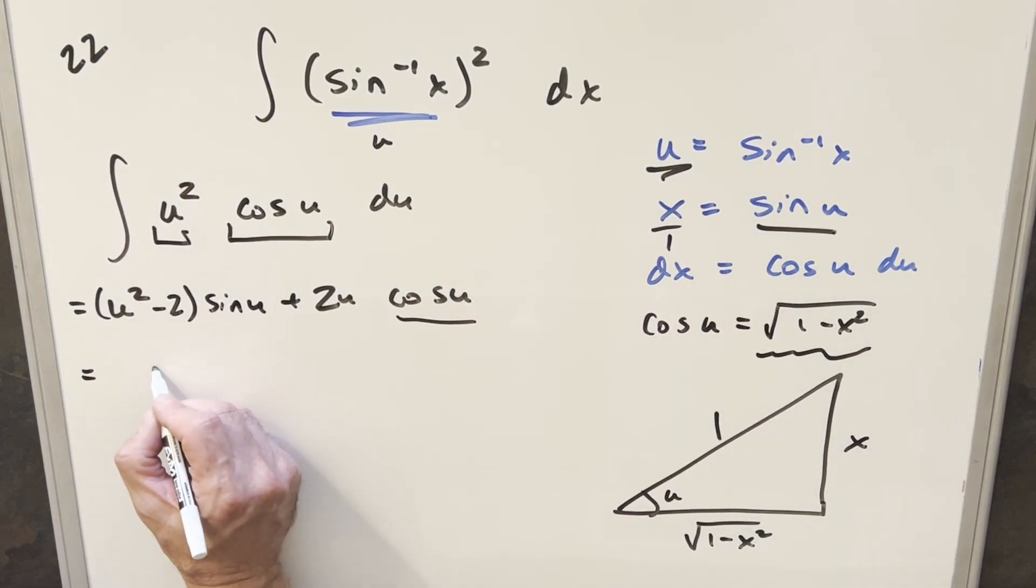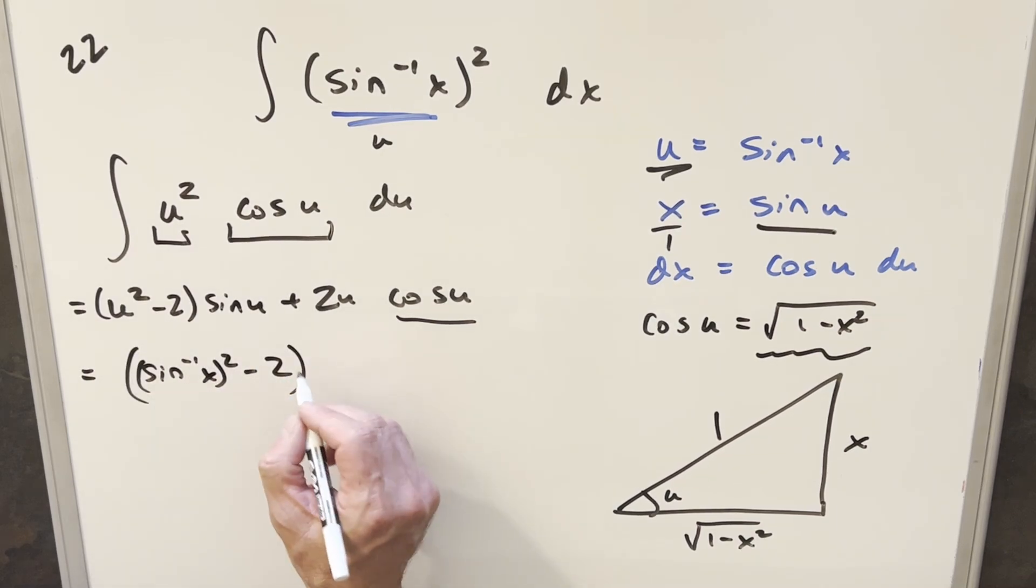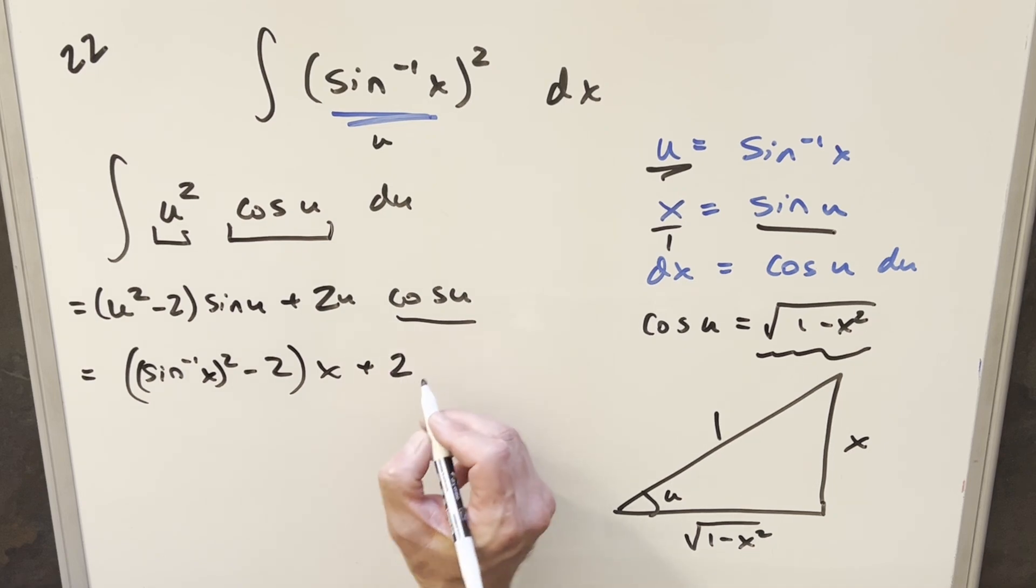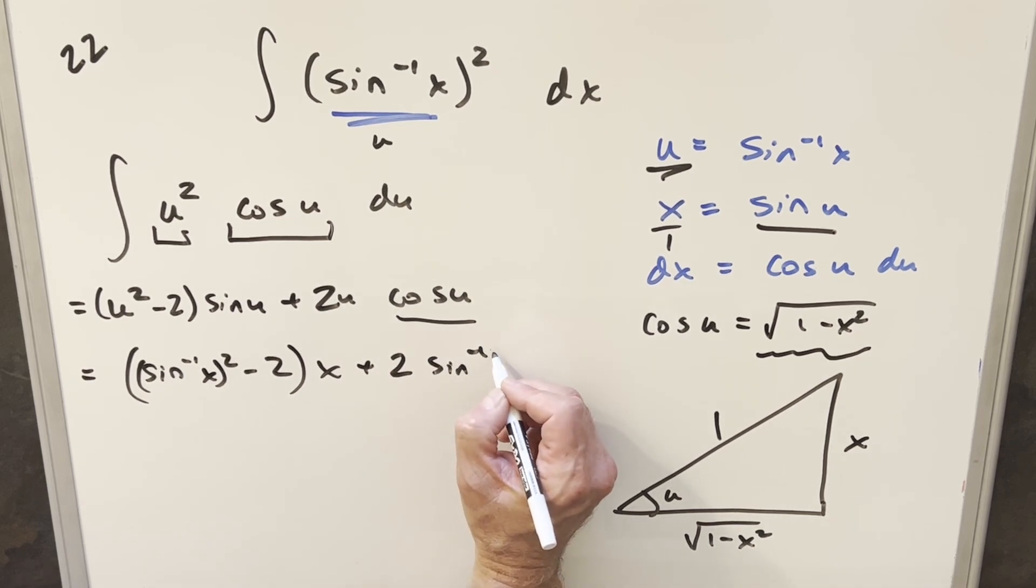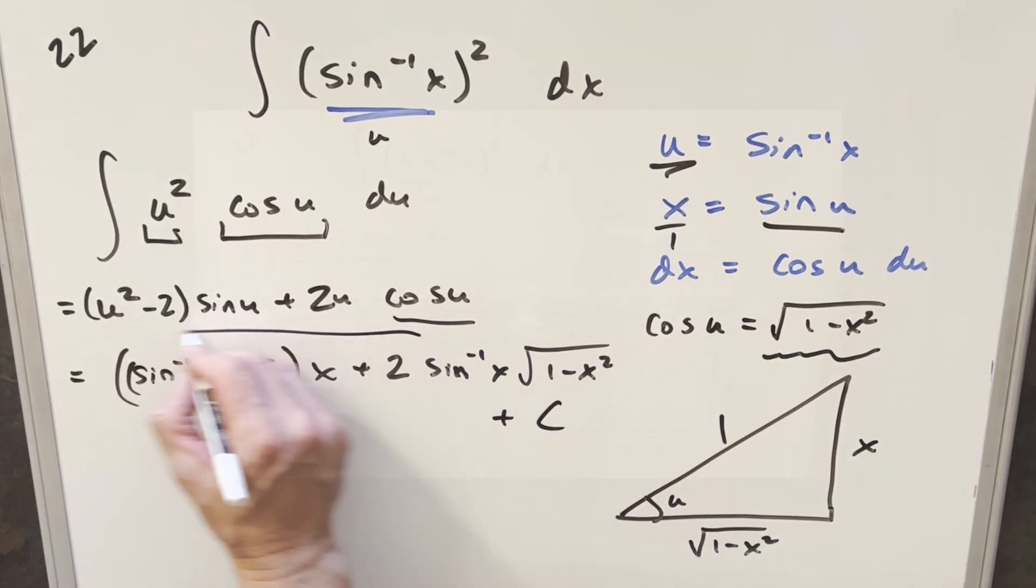So here our u squared is going to be arc sine of x squared minus 2. Then we have our sine u is just an x. And then here 2u, that's going to be 2 arc sine of x. And we have our cosine value, just square root 1 minus x squared. Add a plus c on the end, and that's it.